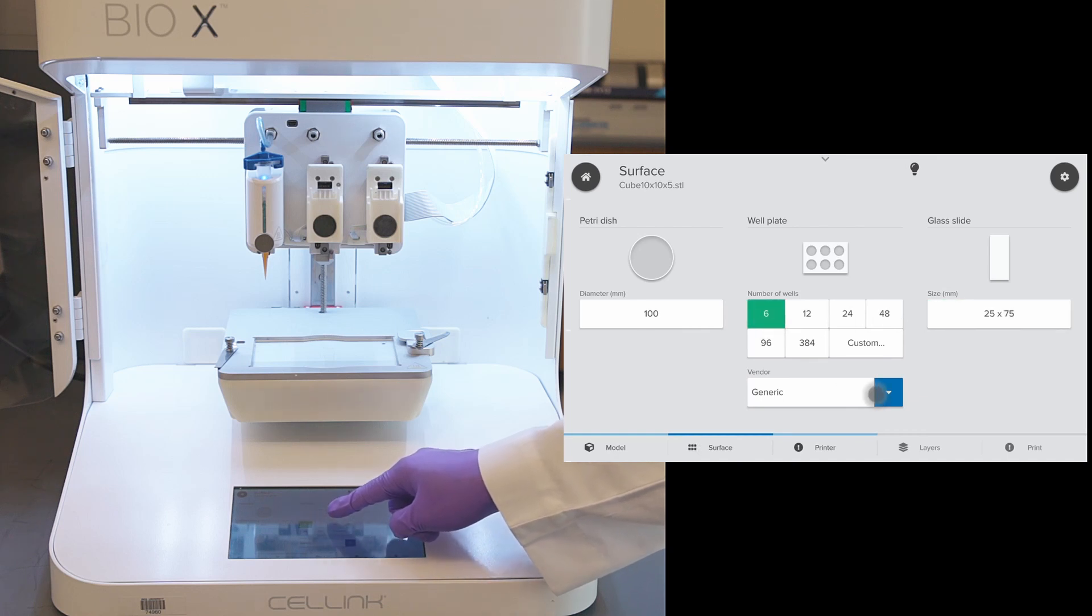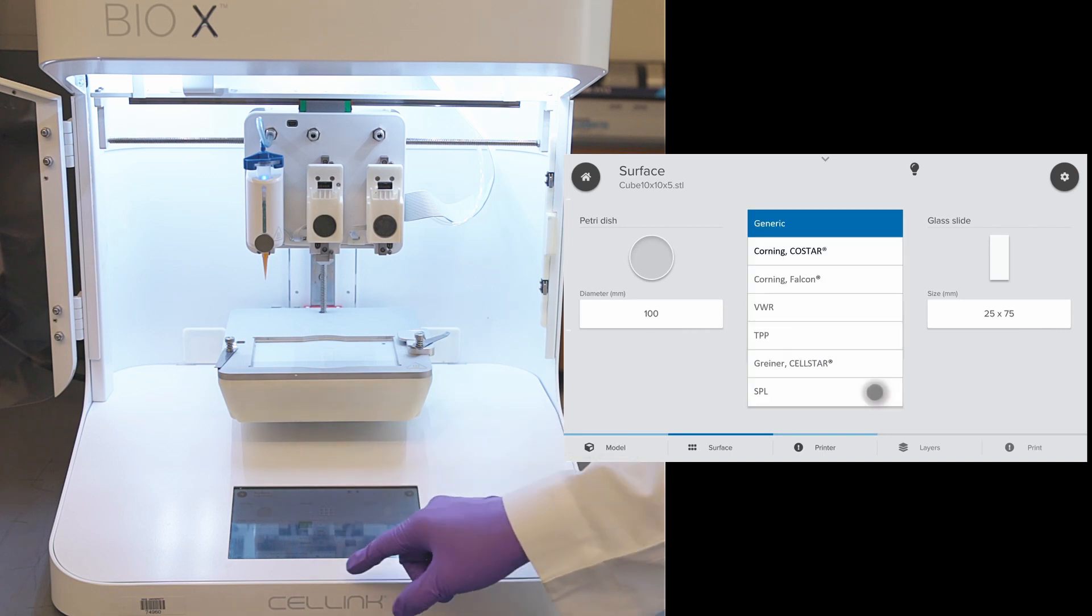Using a 6-well plate, we can define the object to be printed once and the printer will replicate 6 times in each well. We can choose the appropriate vendor to accommodate for slight changes in the well dimensions and spacing.